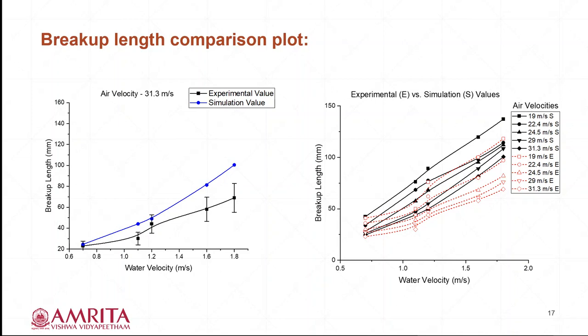The right plot has all the 25 cases which we have simulated, where the black line represents the simulation data and red line represents the experimental data. From this plot, we can observe that the simulation data followed the same trend as the experimental data. That is, at constant air velocity, as water velocity increases, the breakup length increases. At constant water velocity, as air velocity increases, the breakup length decreases. By analyzing all the 25 simulation data, the minimum, maximum average uncertainty from the experimental data is 3.3%, 34.2% and 20% respectively.